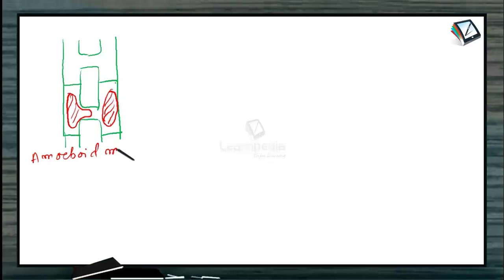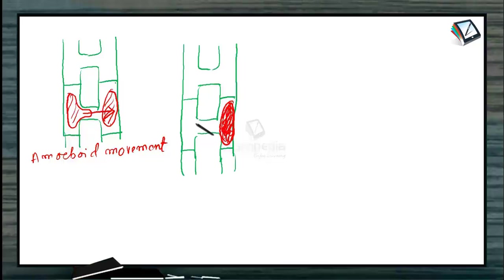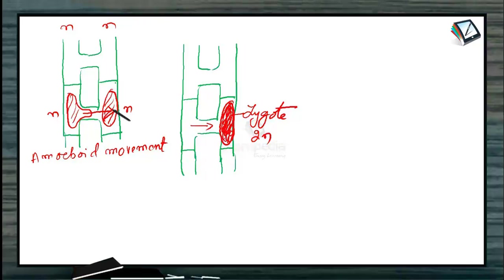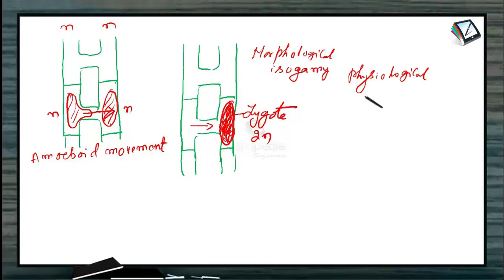The protoplast or gamete of one cell starts migrating into another cell by amoeboid movement. This gamete enters into the other cell and fertilizes. When the gamete from one cell moves into another cell and fertilizes with the other gamete, it becomes a zygote. These are haploid because the filaments are haploid. This zygote is diploid. These two gametes are exactly identical — morphologically similar — but one gamete moves into another cell while physiologically these two are unequal. So it is morphological isogamy but physiological anisogamy: one is active and another is sedentary.